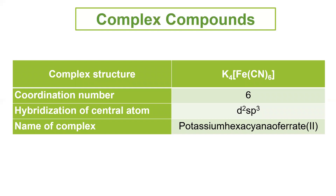Example: K4Fe(CN)6 — cation is potassium, coordination sphere is [Fe(CN)6]4-. The name is potassium hexacyanoferrate. Hexa because there are 6 CN ligands, cyano because of cyanide, and ferrate because iron has a negative coordination sphere.